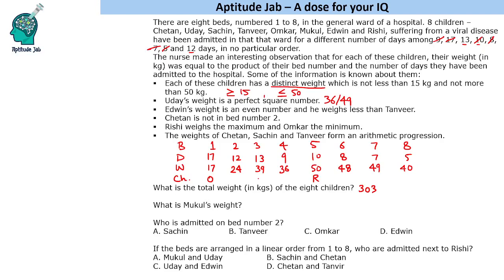So one possibility is 24, 36 and 48. Okay, then we can have 36 cannot go with 39, 3 ka difference is not even right.